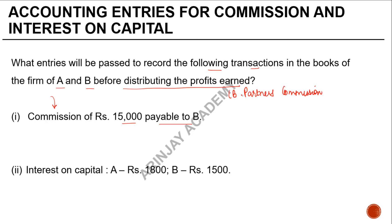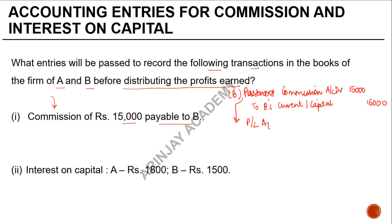Since B is the partner, you write B's commission account debit by 15,000 to B's current or capital account, depending on whether the accounts are fixed or fluctuating, 15,000. And thereafter, you're going to transfer this as an expense account to the profit and loss appropriation account. So profit and loss appropriation account debit 15,000 to partner's commission account 15,000.